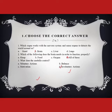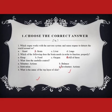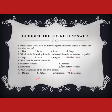The answer to question three is involuntary actions — actions which we cannot control. So our correct answer is D. Question number four: What is the name of the top layer of skin? The options are dermis, retina, cerebrum, and epidermis. Retina belongs to the eye, cerebrum belongs to the brain. Between dermis and epidermis, 'epi' means outermost, so the outermost top layer of skin is the epidermis, and the second layer is the dermis.